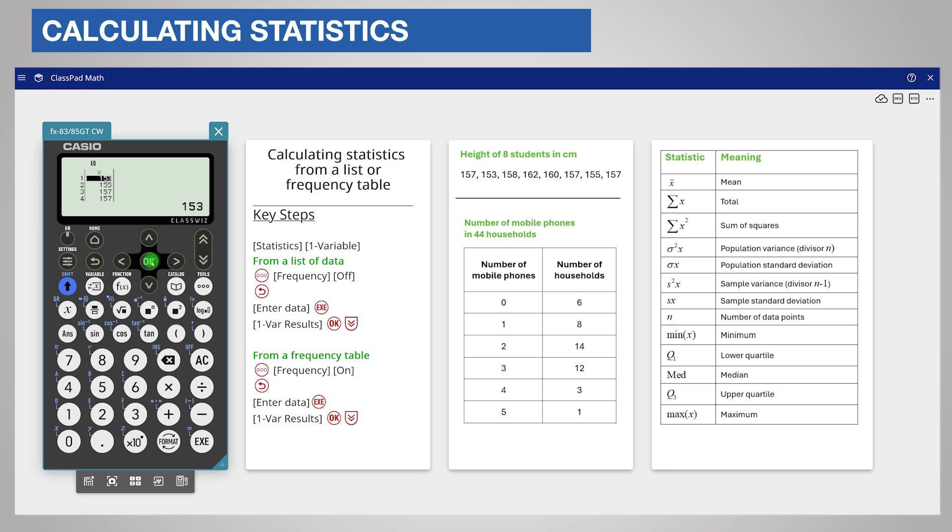We will now look at entering data in a frequency table. First of all, we need to turn on the frequency table. Press Tools, scroll to Frequency, choose OK, and then turn the frequency table on. Press Back twice to return to the data entry. Notice that the data have been cleared and the calculator now displays a frequency table.